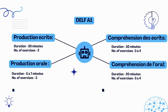Production Orale, the speaking section, has three tasks. The jury asks the candidate about their likes, dislikes, and daily life in the guided conversation for the first task. In the second task, you will be given a few words and you have to pose questions to the examiner using those words. The third task is a dialogue or role play, which aims to solve a problem related to daily life, evaluating candidates' abilities to greet people, ask questions, request, and negotiate.